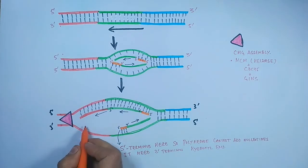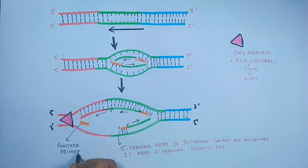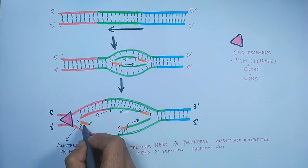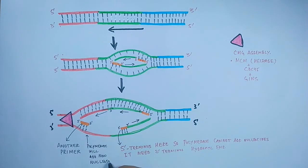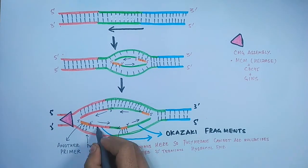So away from this side another primer is added as shown in the figure. And now the polymerase has 3 terminus end to add nucleotide onto it and will synthesize the strand till it reaches the previous primer. So this way Okazaki fragments are created.